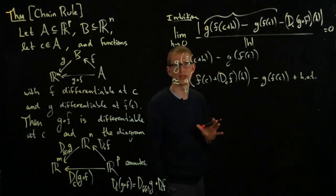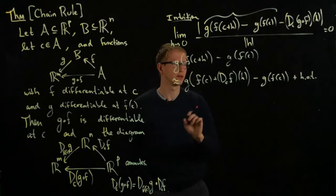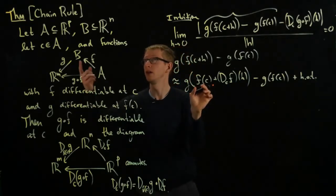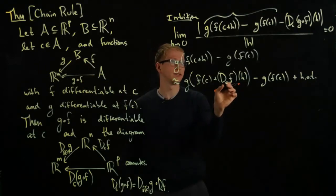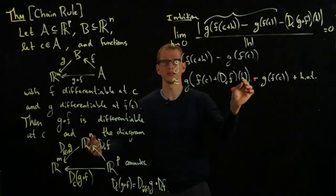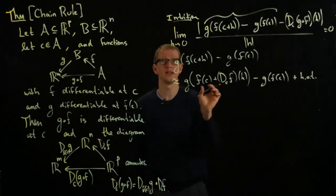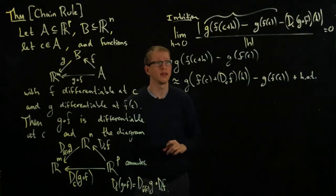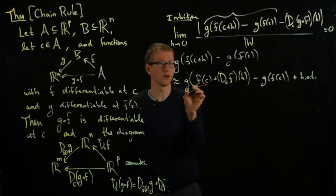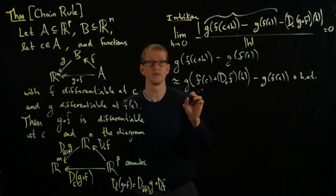Minus G(F(C)) plus higher order terms. Let's make sure at this step the input for G is well defined. F(C) is an element of R^N, D_C F—H is an element of R^P, and when you push it forward along this linear operator, we get an element in R^N. So we have two elements of R^N, this expression makes sense, and as long as H is small enough, if F was defined on an open set, this could be made small enough so it's in the domain of G.